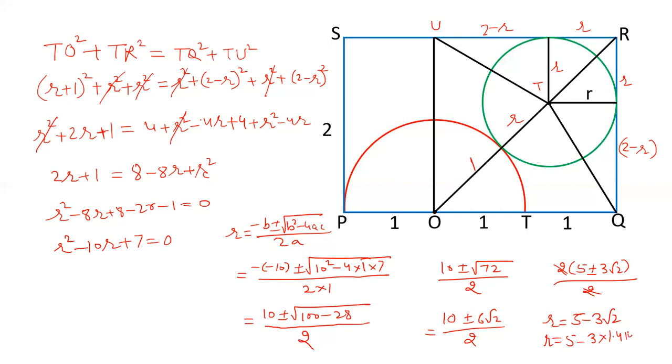I put the value of root 2. It will be 1.414. That will be 4.242. When we subtract this, that will be 0.758. The value of R is 0.758 approximately. We can also write the value of R as 5 minus 3 root 2. The answer of this question is 5 minus 3 root 2.